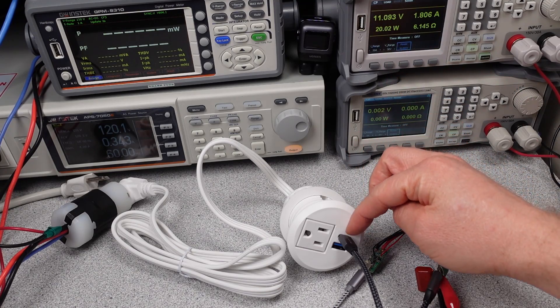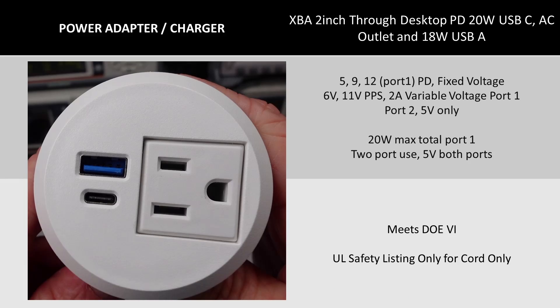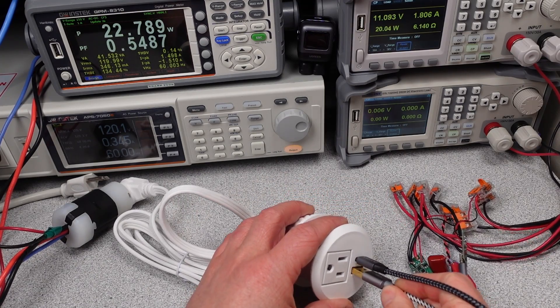In terms of modes of operation, the USB-C port has a decent amount of options. 5, 9, and 12 volt fixed modes, and 6 and 11 volt PPS modes. Being a 20 watt maximum port, this means it can't really deliver all that much current in these modes, but at least it has all the options, so you should be broadly compatible with devices.